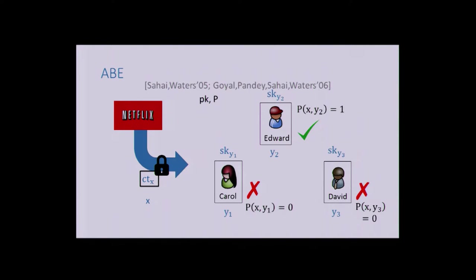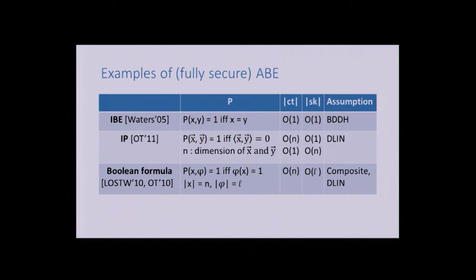In general, we have a predicate P, which is public. The ciphertext is indexed by some attribute X, and the secret key is indexed by attribute Y. A secret key for Y decrypts the ciphertext for X if and only if P(X, Y) is true. The simplest example is equality: P(X, Y) is true if X equals Y—this is called identity-based encryption, achievable in constant size using standard static assumptions with pairings. We can also do inner product: the predicate takes two vectors of dimension n and is true if they are orthogonal. You can do that in linear and constant size, or any trade-off.